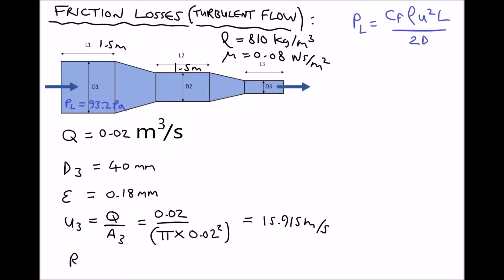So next we can calculate our Reynolds number in pipe 3. Reynolds number is ρud over μ, or ρu3d3 over μ. So we have 810 times 15.915 times the diameter in meters, 0.04, all divided by the viscosity of 0.08. And this time we get a Reynolds number equal to 6446.